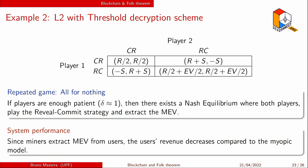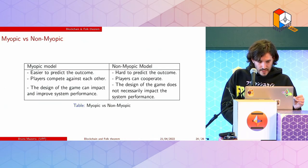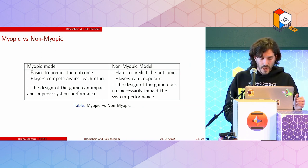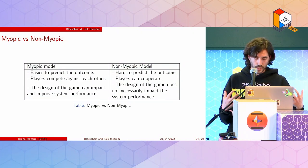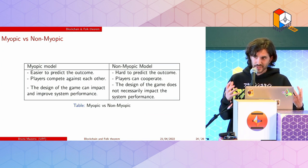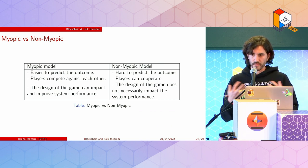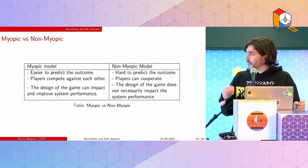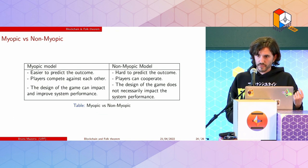In summary: in the myopic model it's easier to predict outcomes, players will compete against each other, and the design of the game can improve system performance. However, in the non-myopic model it's very hard to predict outcomes, players can and will cooperate, and the design of the game does not necessarily impact system performance in the way we would like.